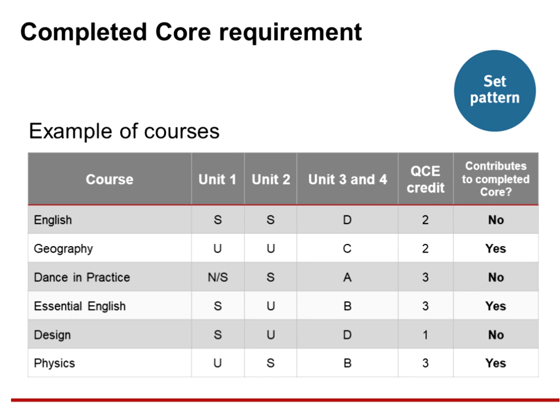The examples shown here are for courses of study, not for one student's selections. A student studies English and achieves satisfactory in Unit 1 and Unit 2. In Year 12, the student achieves a grade of D for the Unit 3 and 4 pair. This student does accrue credit where the set standard was met; however, as they did not achieve a grade of C or better for the Unit 3 and 4 pair, this credit will not contribute to the 12 credits required from completed core courses. They accrue two credits in the core category of learning, zero contributing to the completed core.